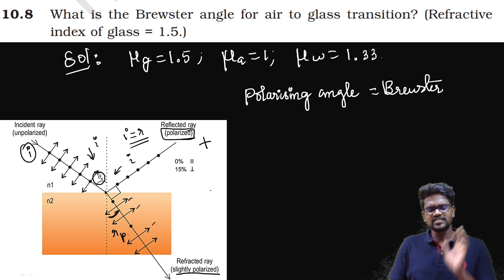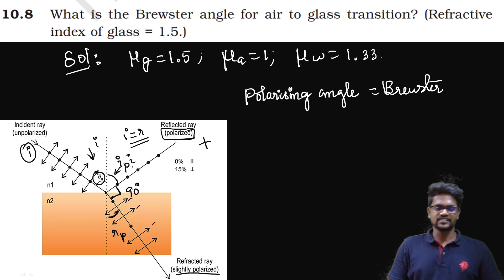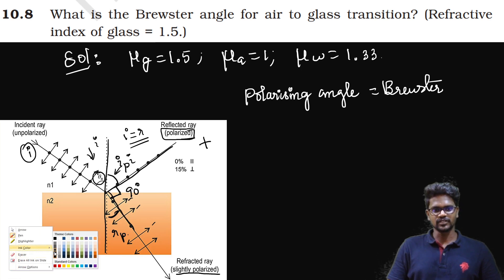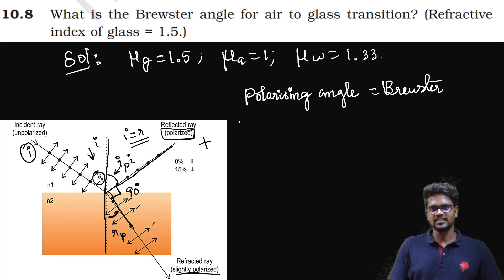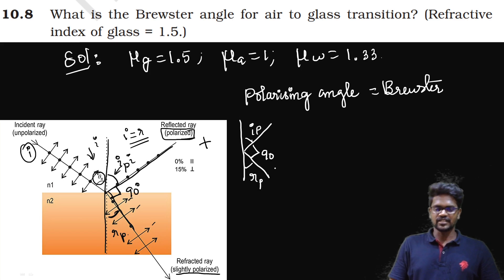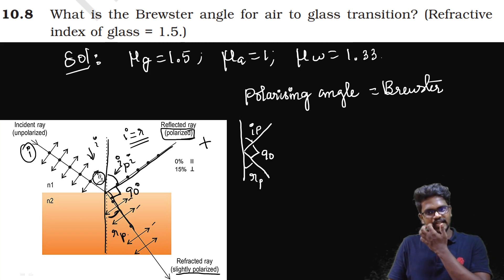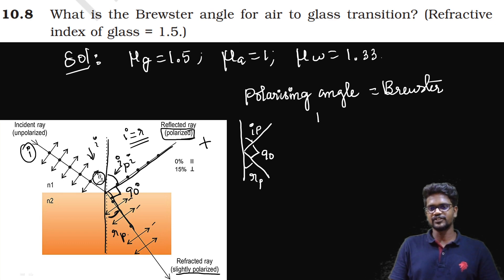If we know the basic setup, this angle is 90 degrees. This is IP, the polarizing angle. This is RP, the refracted ray. If you have a straight line, you can see that this angle is 90 degrees. This is the polarizing angle IP, and this is the reflection angle RP.